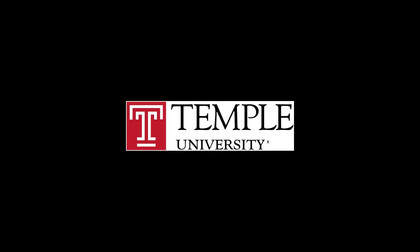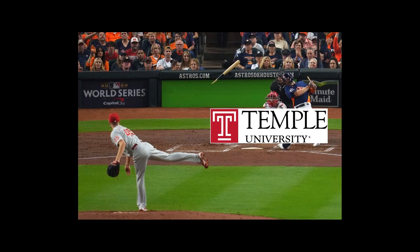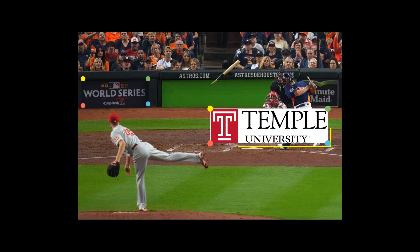Let's go back to our example from the beginning. I have a logo — say the Temple logo — that I'd like to project onto the wall behind home plate. One of the requirements of homography is that we need at least four corresponding points. That is to say, we need a series of points where the images are supposed to line up. In this case, it's the four corners of the Temple logo and the four corners of the logo behind the batter. What we're doing is setting up starting and transformed vectors.